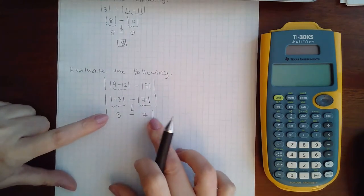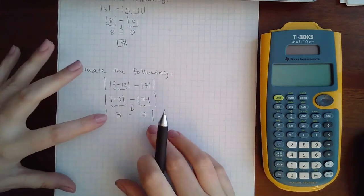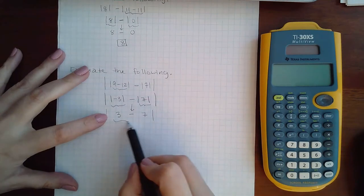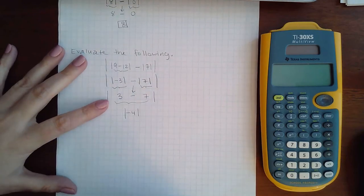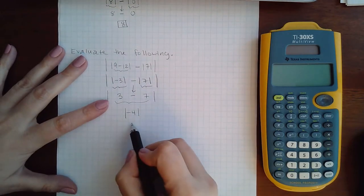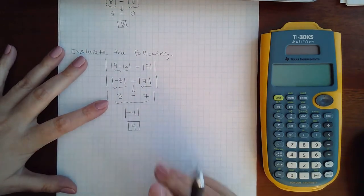Now within the bigger or the outside absolute values, I do have to compute what's inside. And I get negative 4. And then finally I can evaluate the absolute value of negative 4 is positive 4.